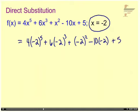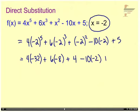Alright, now simplifying, I'm going to do the exponents first. Here I'm going to have 4 times negative 2 to the 5th power is negative 32, plus 6 times negative 2 cubed is negative 8, plus negative 2 to the 4th, or squared is a positive 4, minus 10 times negative 2 plus 5.